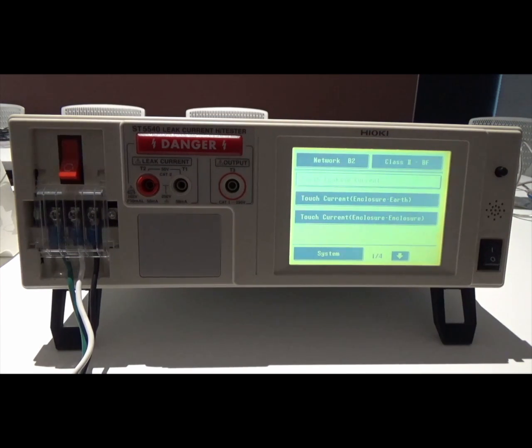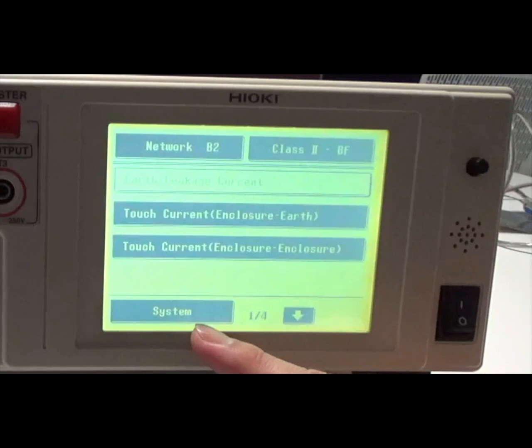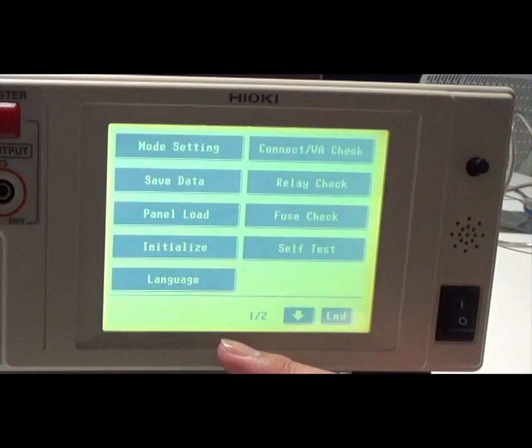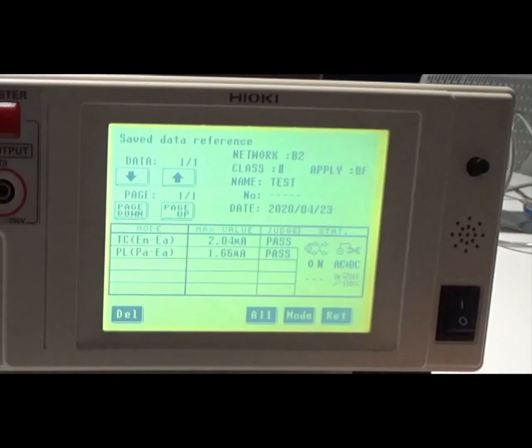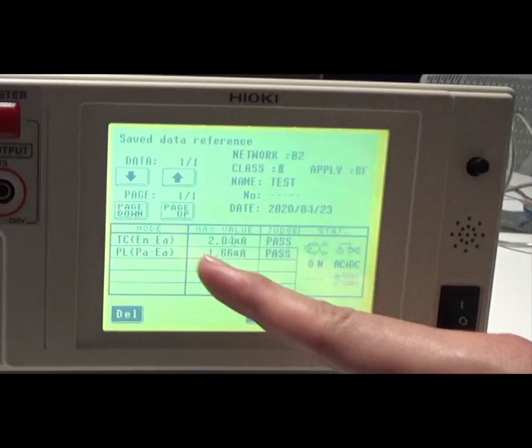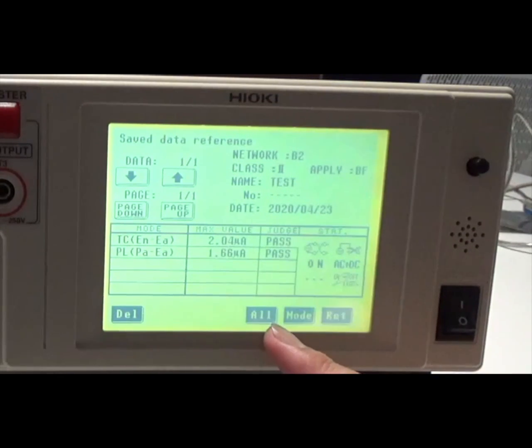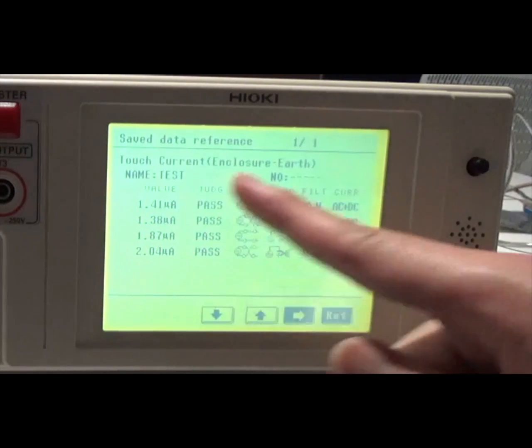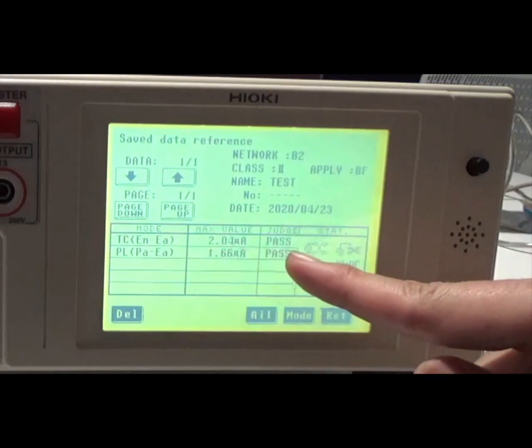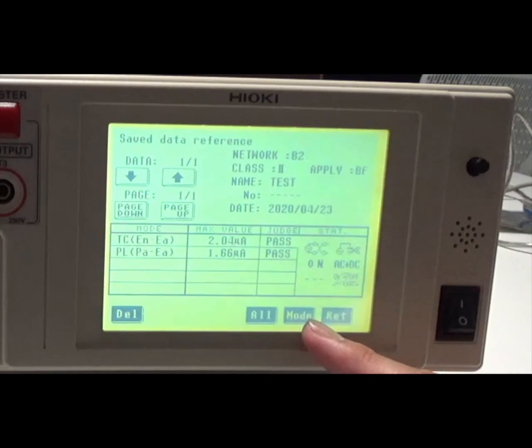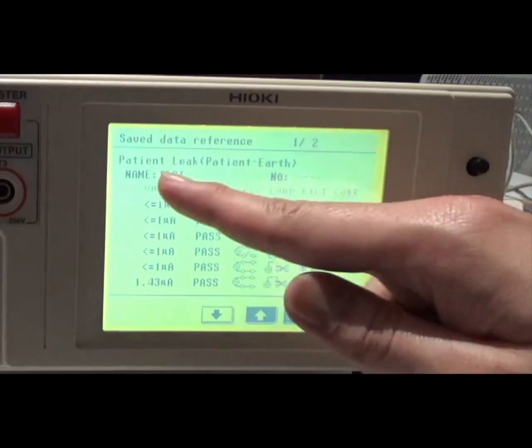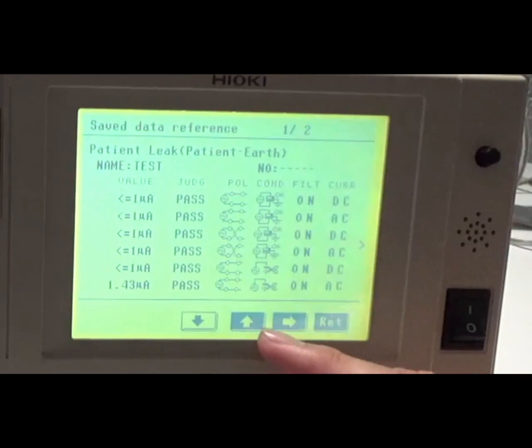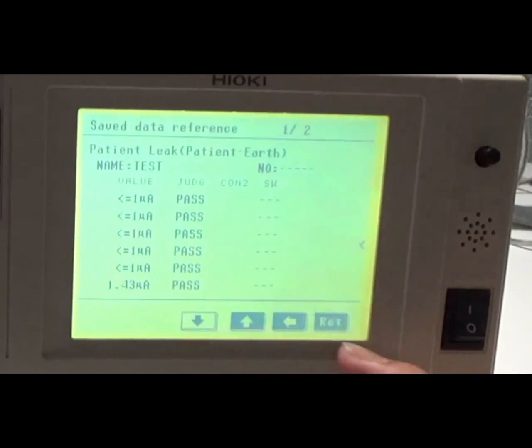I saved two test results. To see our saved data, press this system key and save data. If you want to check the details, press the all key. If you want to check the second result, press the mode key and then the all key. We can see the results of the second patient leakage current of patient to earth.